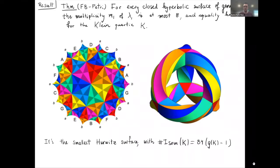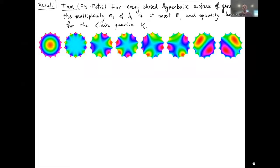What makes this surface special is that it's the smallest Hurwitz surface, meaning it has the largest number of isometries proportional to genus minus one. There's a whole sequence of such surfaces, but this is the smallest one. Part of the statement is that the multiplicity of lambda one equals eight for this surface — here's a picture from Wikipedia of eight linearly independent eigenfunctions corresponding to lambda one, which is approximately equal to 2.68.